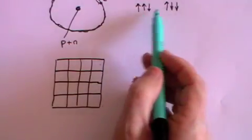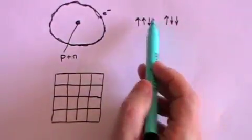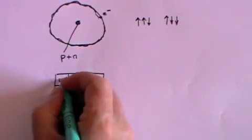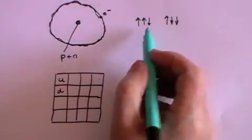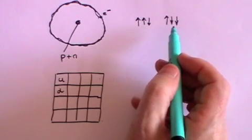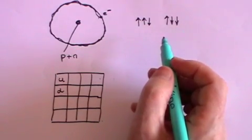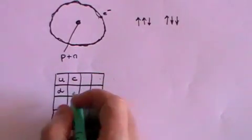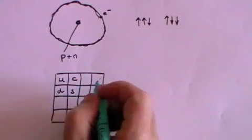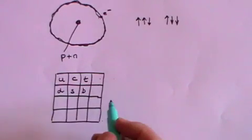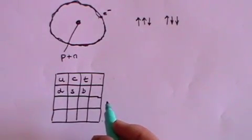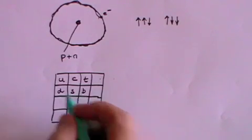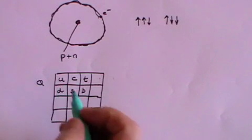We normally draw the standard model as a 4x4 grid. There are in fact six quarks. There are the up quark and the down quark, which is what we've got here. And then there are essentially heavier versions of these quarks. There's a charm quark and a strange quark. And there's a top quark and there's a bottom quark. And those are the six quarks, the six fundamental particles.